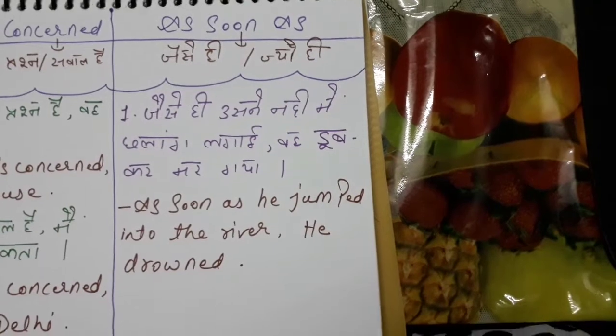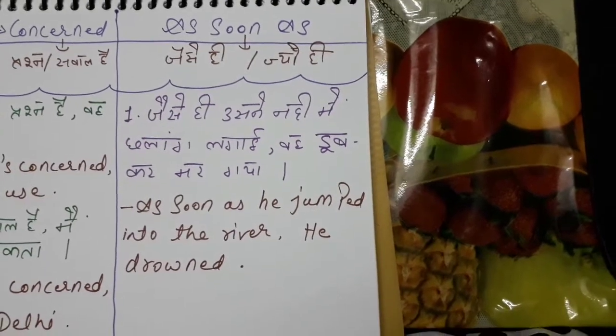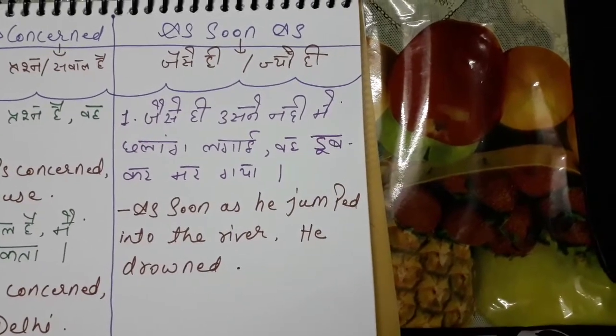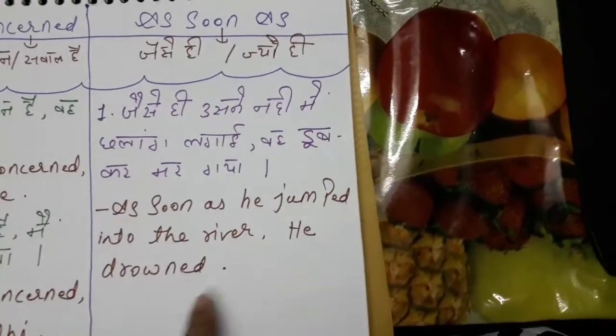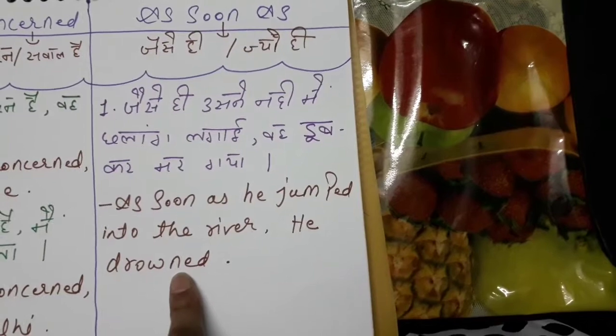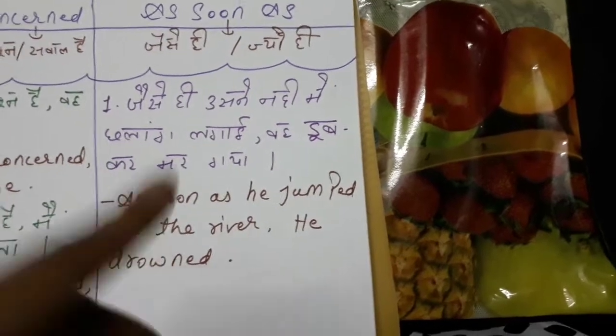So the sentence becomes: 'As soon as he jumped into the water, he drowned.' 'Drowned' means 'doob kar marna' — to drown.